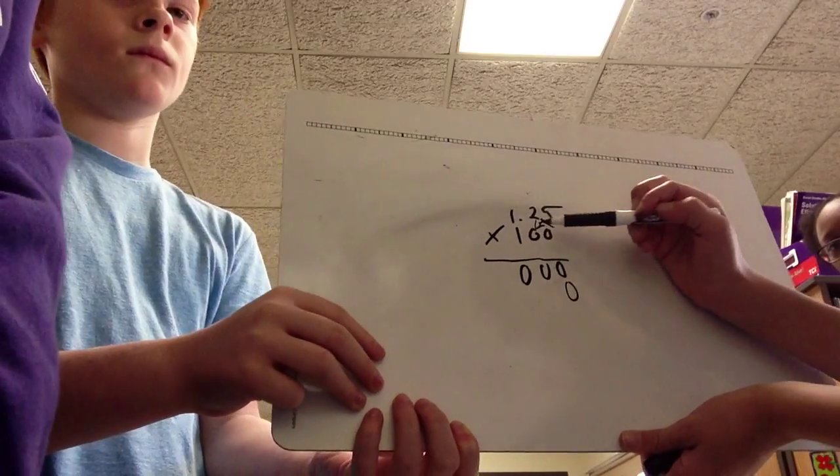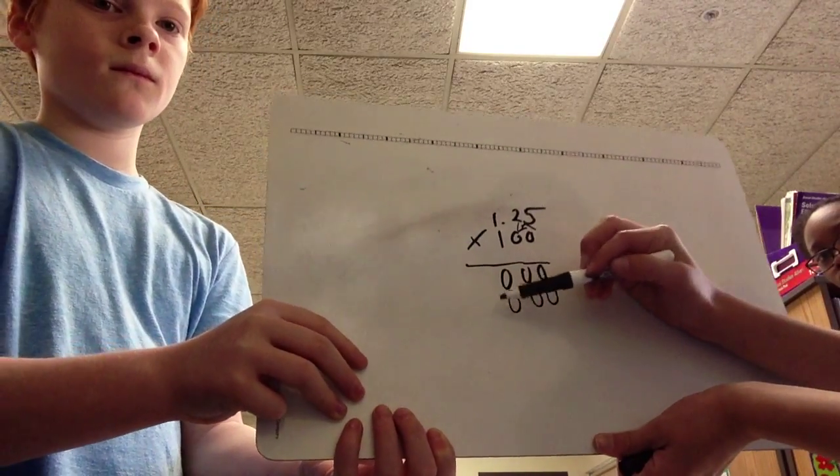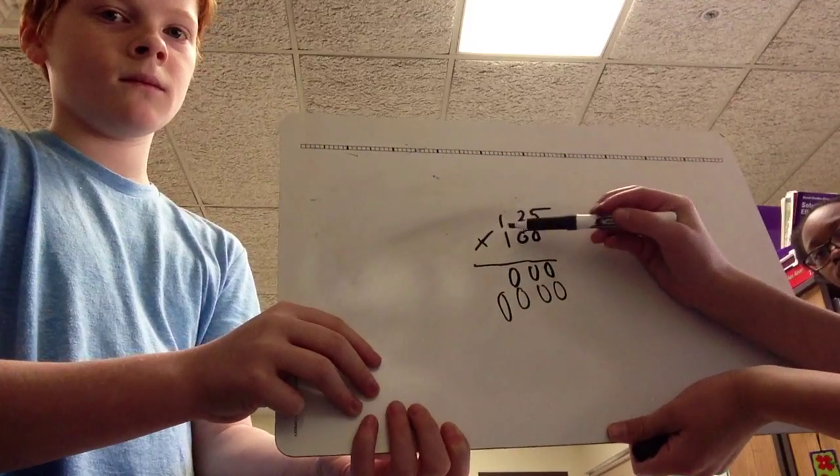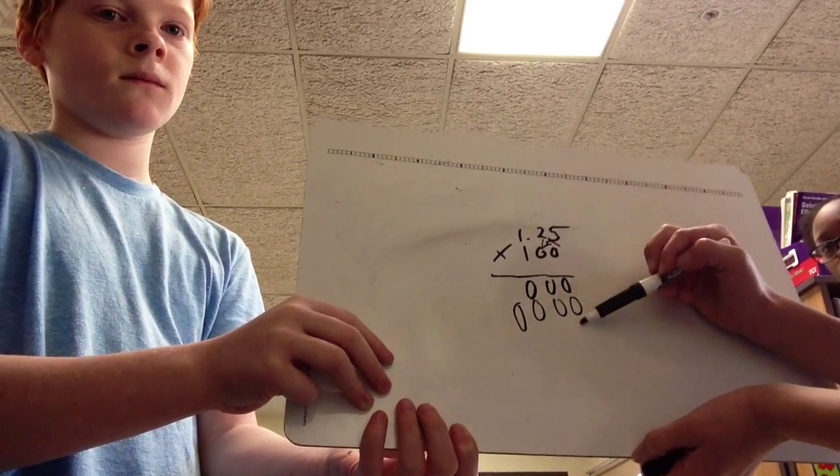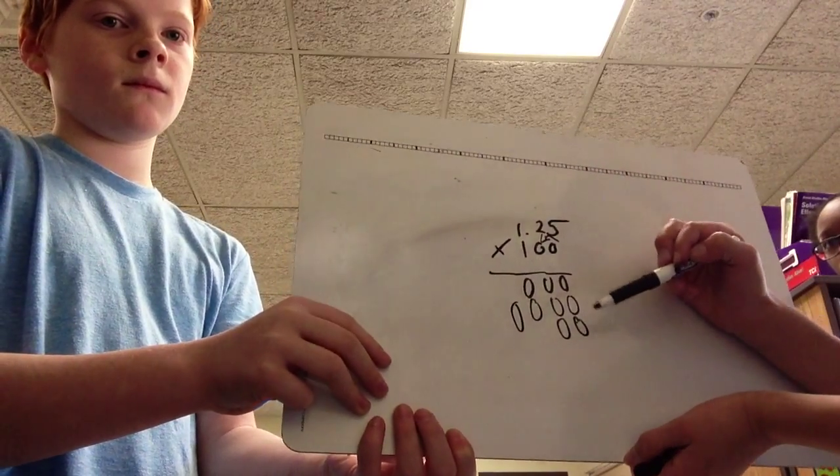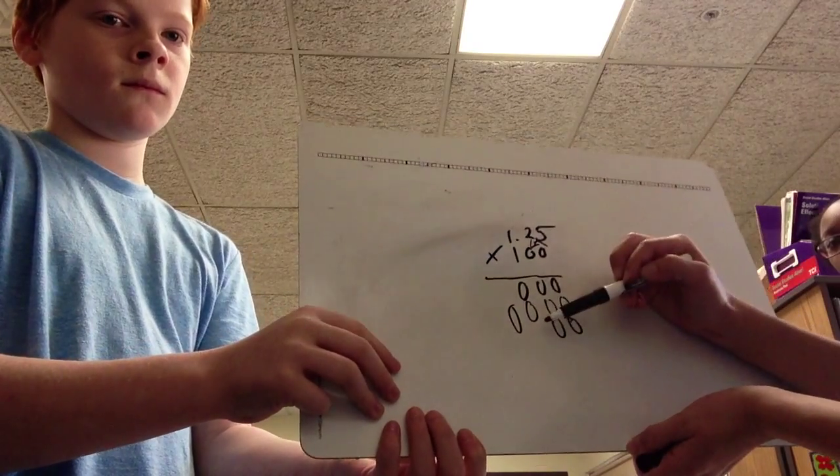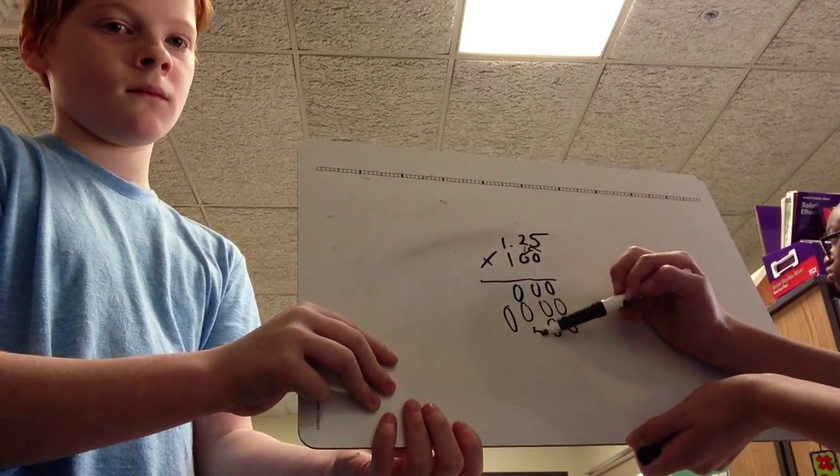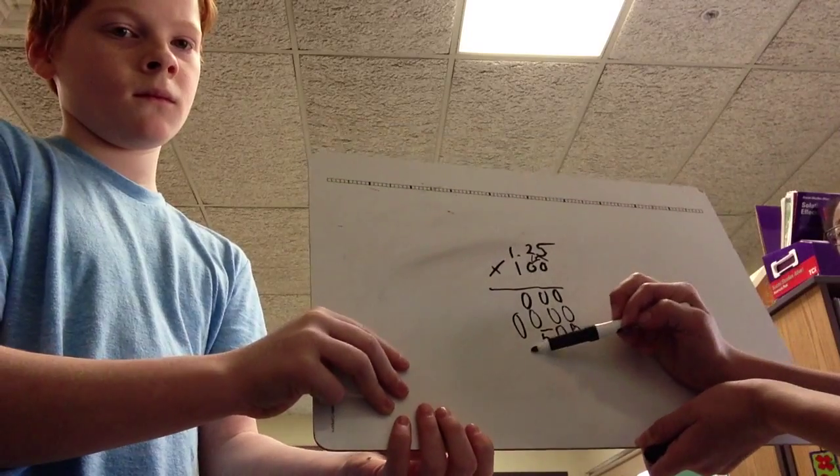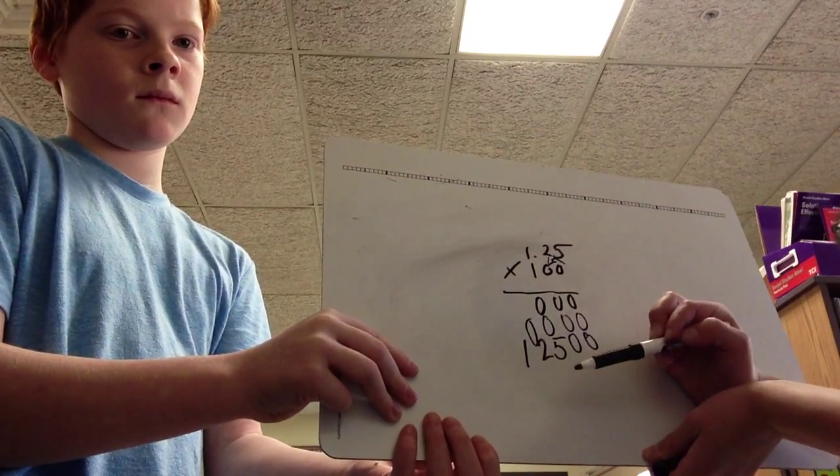Now you do 0 times 5, 0 times 2, and 0 times 1. And now that you're moving on to the hundreds, you have to do 2 of those placeholders. And 1 times 5 is 5, 1 times 2 is 2, and 1 times 1 is obviously 1.